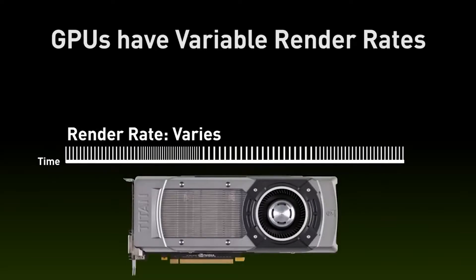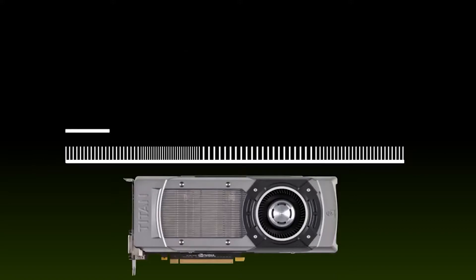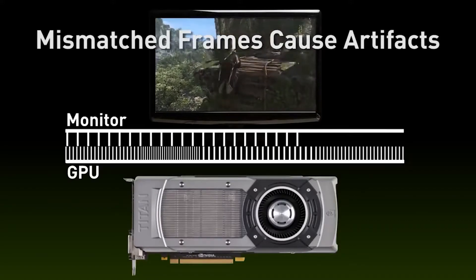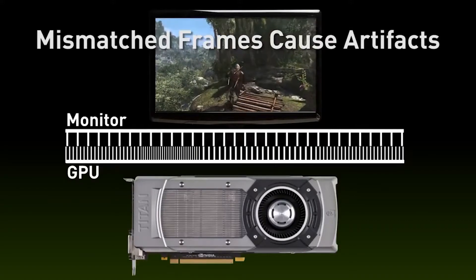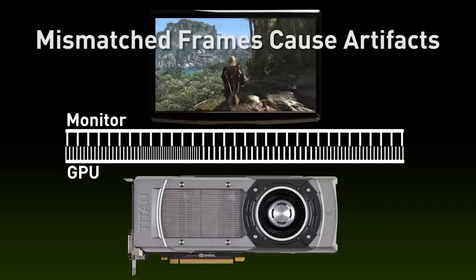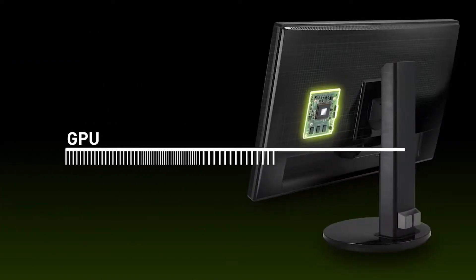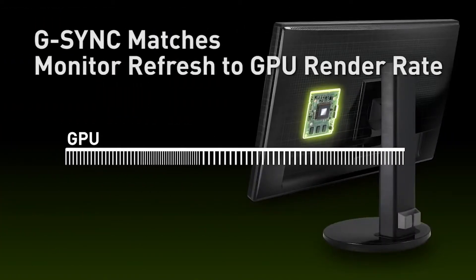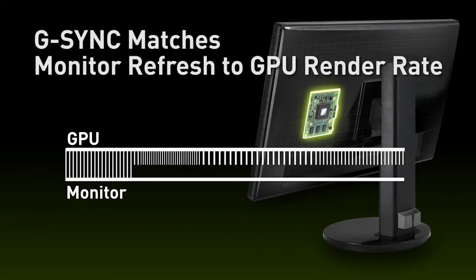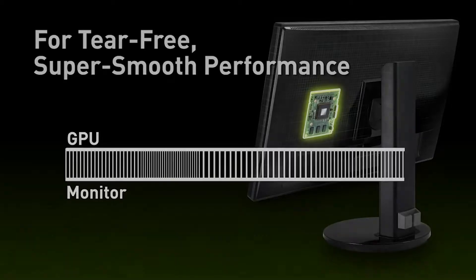And finally, when you run unrestricted frame rates, the latency between frames constantly fluctuates. If you keep it steady, just under your monitor's refresh rate, G-Sync will stay enabled, frame rates will stay constant, and therefore the latency is completely consistent. This consistent latency will help you better train muscle memory for reactive shooting in competitive titles.